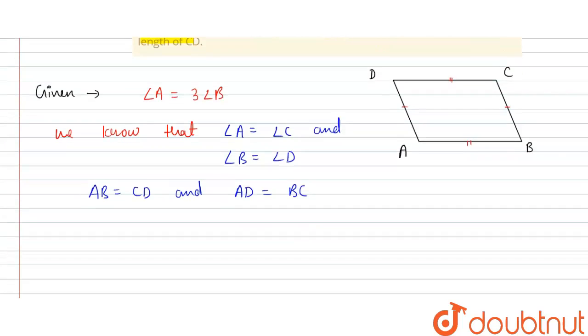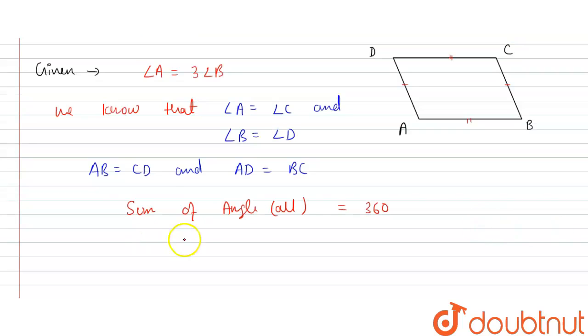This is the data we are using over here. So first thing, we also know that the sum of the angles is equal to 360 degrees in any quadrilateral. So this is equal to angle A plus angle B plus angle C plus angle D equals 360.